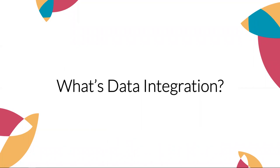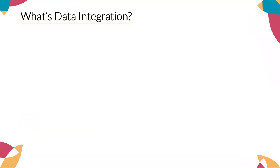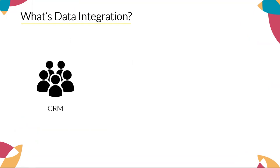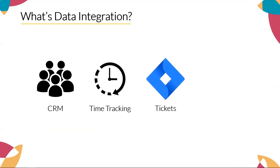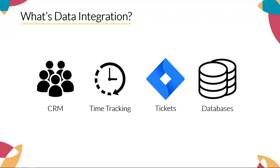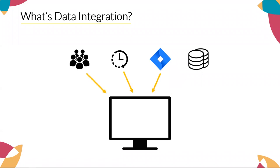So what's data integration? Usually in an organization, there will be several IT systems that hold different kinds of data — for example, a CRM containing information about your customers, a time tracking system, a ticket system like Jira, or even just simple databases containing your products, sales data, or other data. The basic idea behind data integration is that you want to have a single easy way to access all this data from one place. And of course, Confluence is a great place to do this. Data integration has actually been a popular research area in computer science for many decades, with papers dating back to the 80s and 90s.